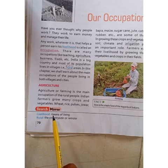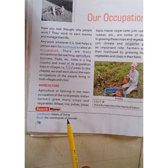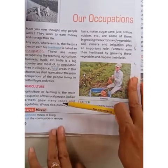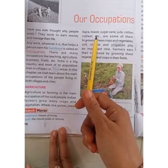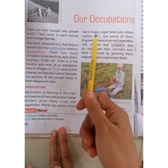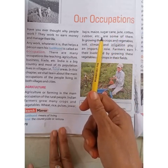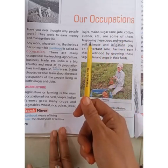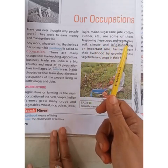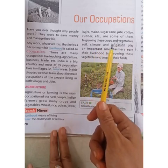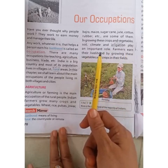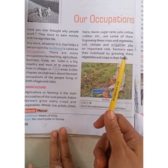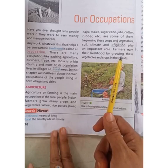Livelihood means means of living. Rural means the countryside or a remote area. On page number 70, the next paragraph continues: bajra, maize, sugarcane, jute, cotton, rubber etc. are some of them. In growing these crops and vegetables, soil, climate and irrigation play an important role. Farmers earn their livelihood by growing these vegetables and crops in their fields.